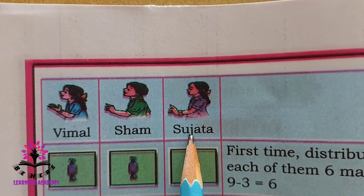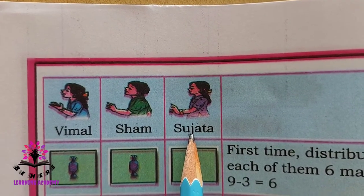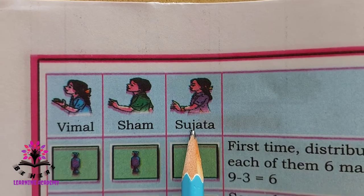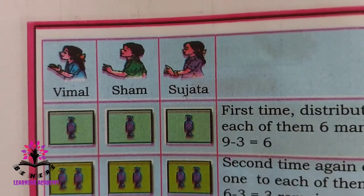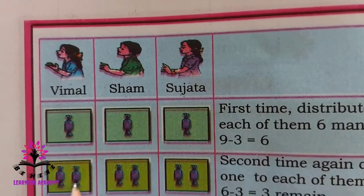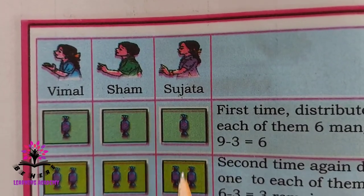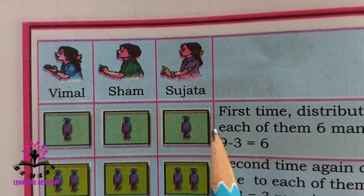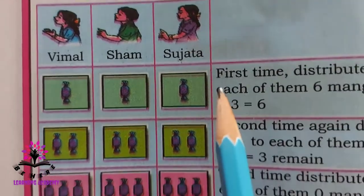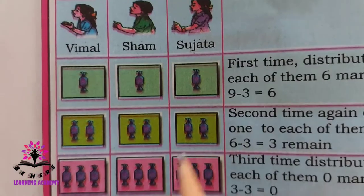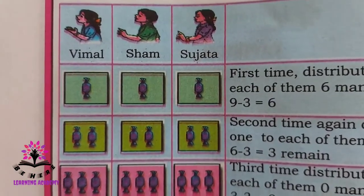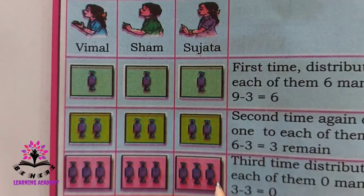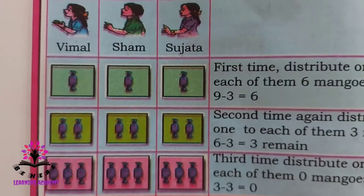How many chocolates will remain then? Six, isn't it? Now you have six chocolates, so give them two each — two to Vimal, two to Shyam, two to Sujata. How many will remain? Three more chocolates. Then give the remaining three chocolates equally so that each one will get three chocolates each.